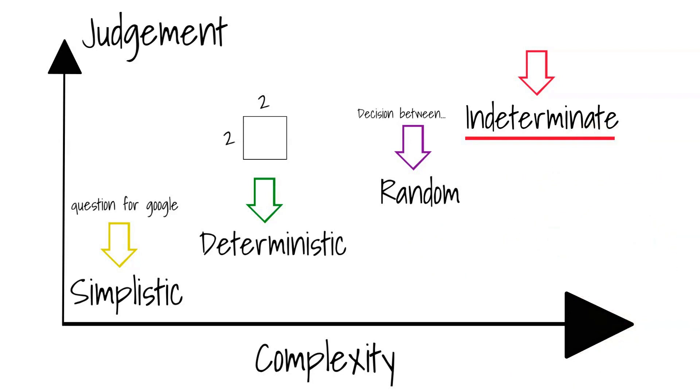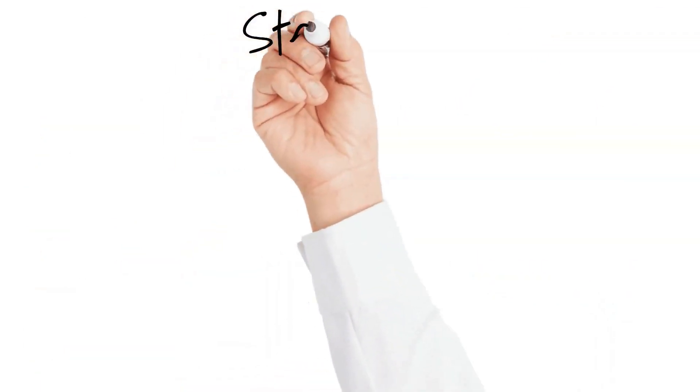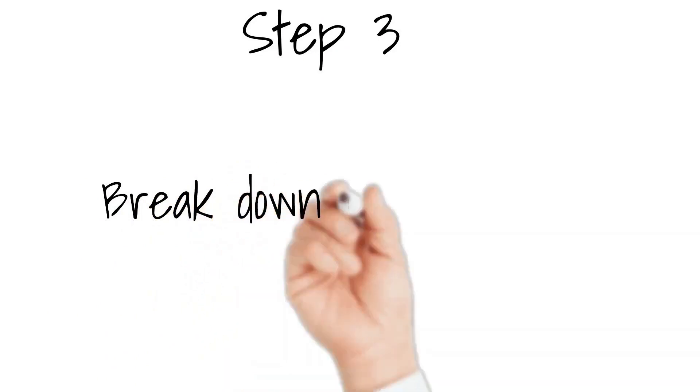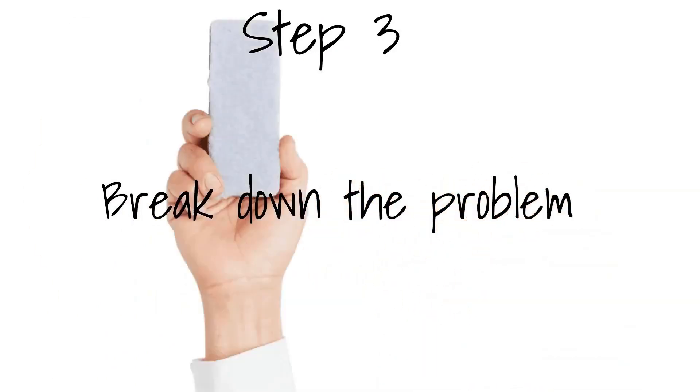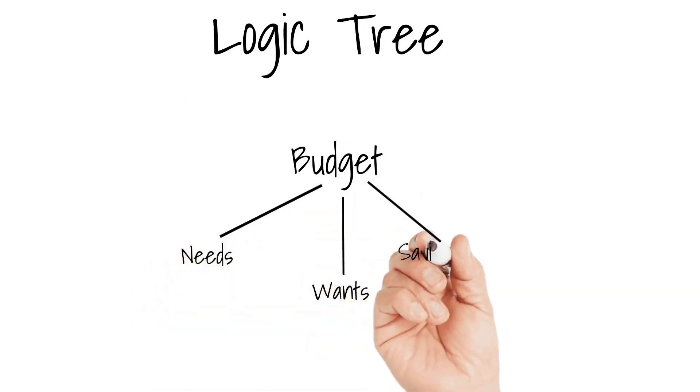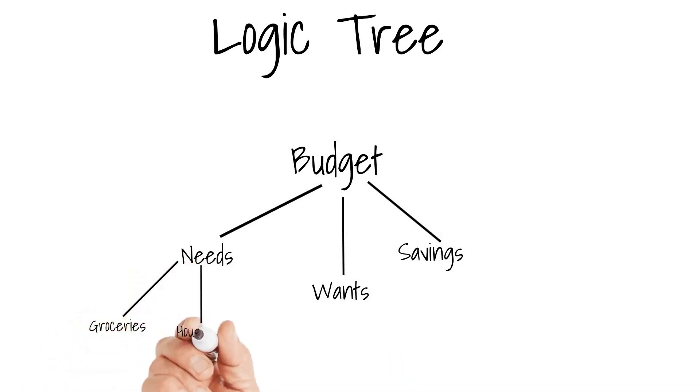In this video I want to dive deeper into type four, indeterminate, the most complex problems. Step three: in the case of these complex problems, the next step is to identify the components and influence factors of the problem. For this we are going to use the logic tree. A logic tree is separating a problem into several parts.